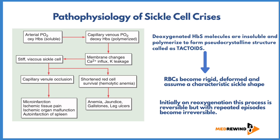This also leads to reduced red cell survival, potentially causing hemolytic anemia with symptoms like anemia, jaundice, gallstones, and leg ulcers. The deoxygenated HbS molecules are insoluble and polymerize to form pseudocrystalline structures called tactoids. These tactoids become rigid, deformed, and assume a characteristic sickle shape. Initially on reoxygenation this process is reversible, but with repeated episodes it becomes irreversible.